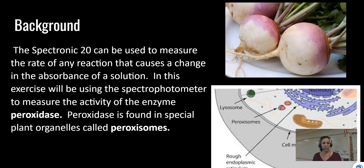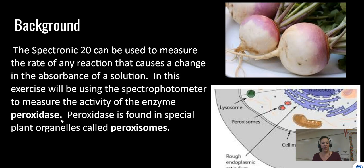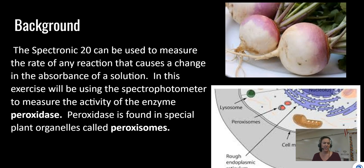We're going to look at an enzyme called turnip peroxidase. The suffix '-ase' tells us it's an enzyme. I took a turnip, peeled it, put it in a blender with water, and strained it multiple times to extract the peroxidase enzyme. This enzyme is normally found in an organelle called the peroxisome, which contains specific enzymes necessary to break down byproducts of cellular reactions.